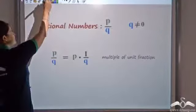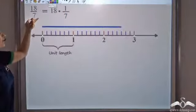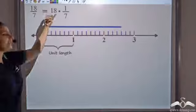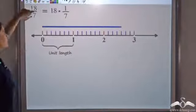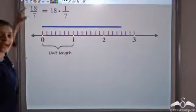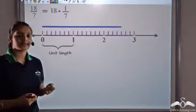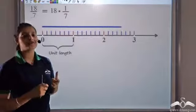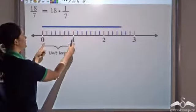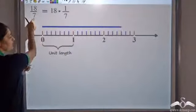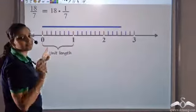Now let's look at the number eighteen by seven. Eighteen by seven can be seen as eighteen times one by seven, that is a multiple of a unit fraction. Whenever we have a rational number, the denominator tells us the number of parts into which we should divide our unit length. So the denominator seven tells me the unit length should be divided into seven equal parts.